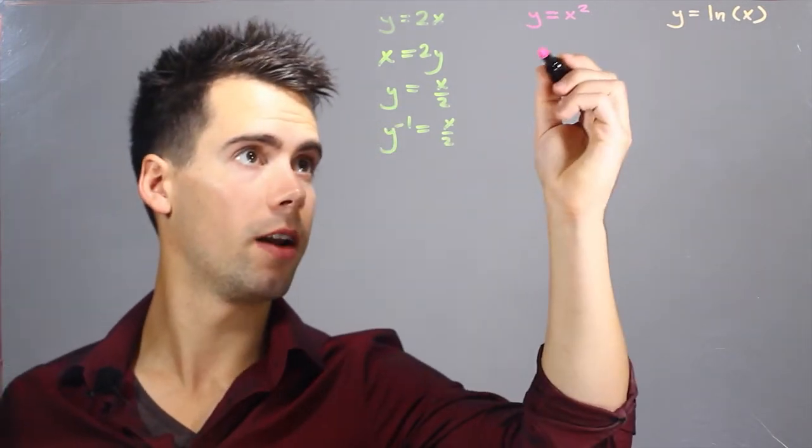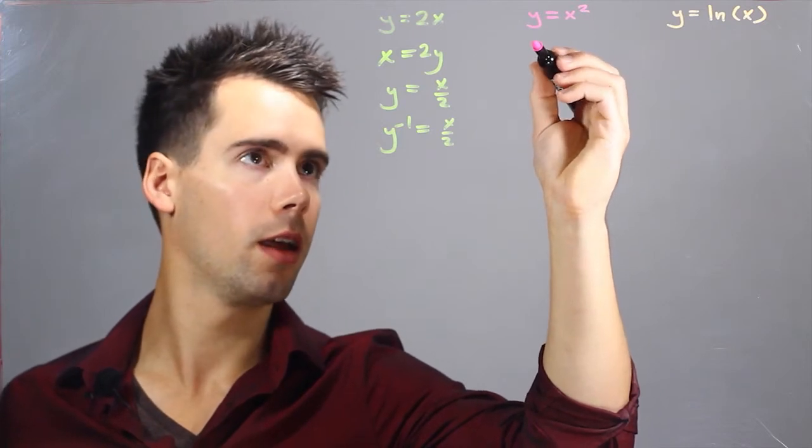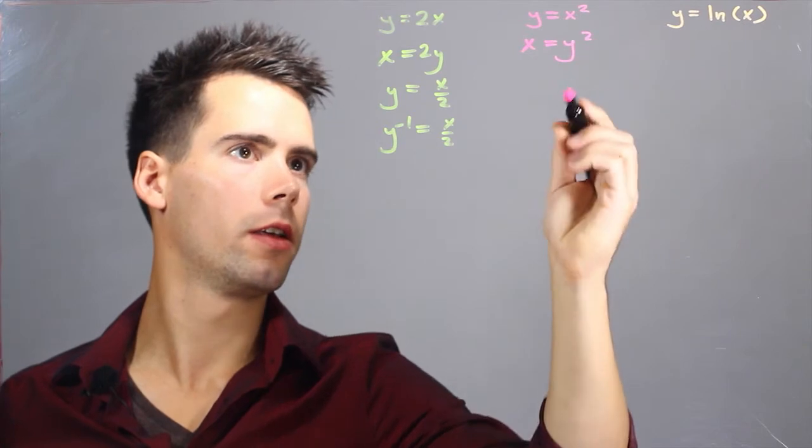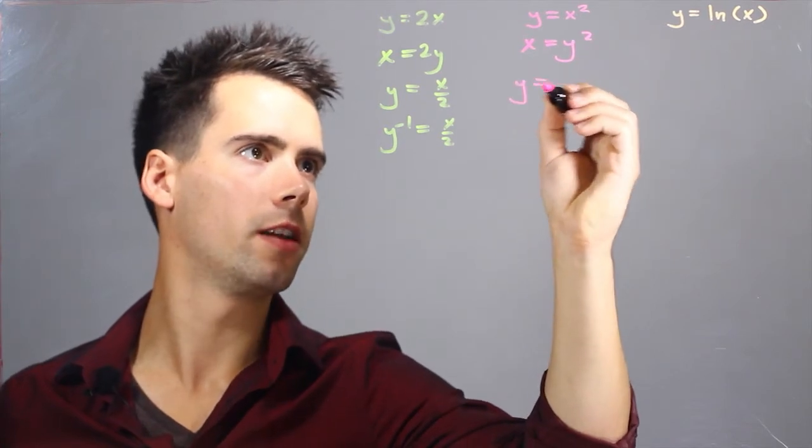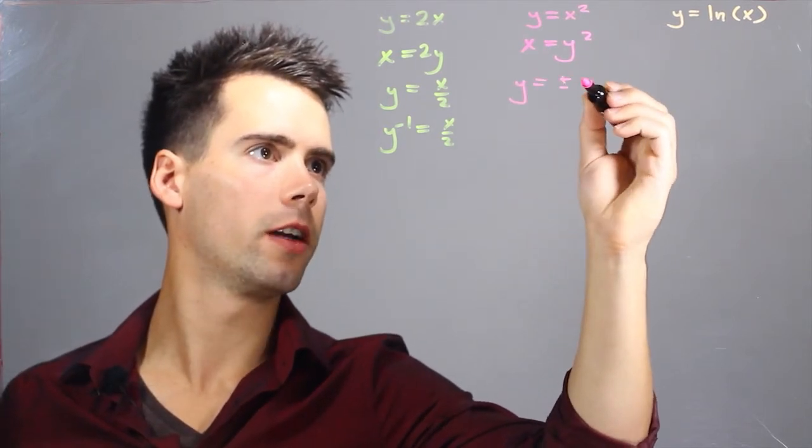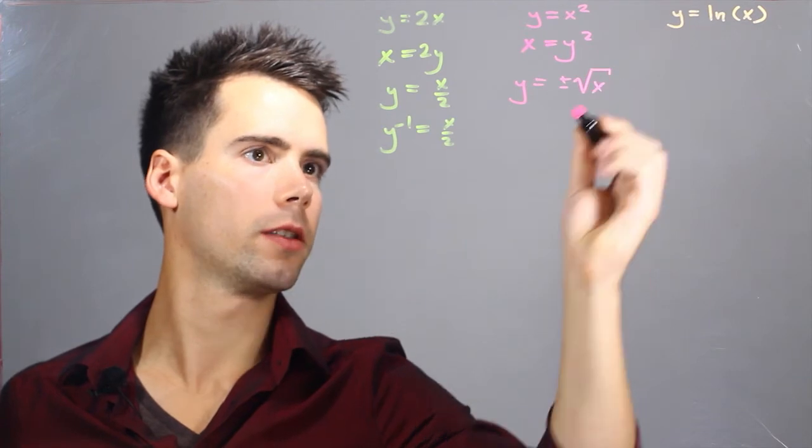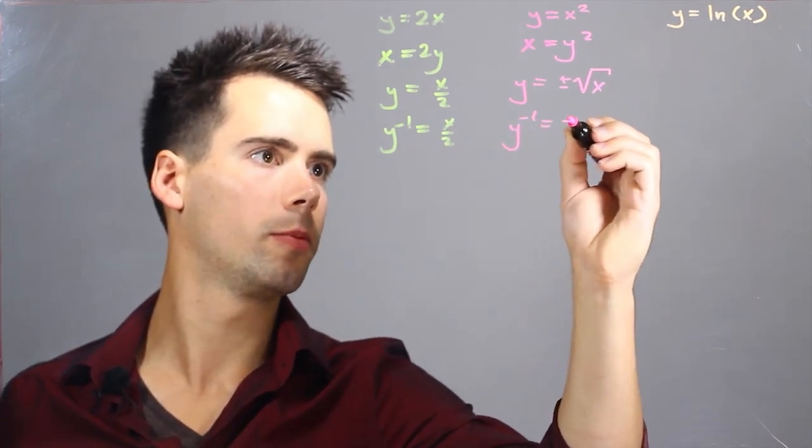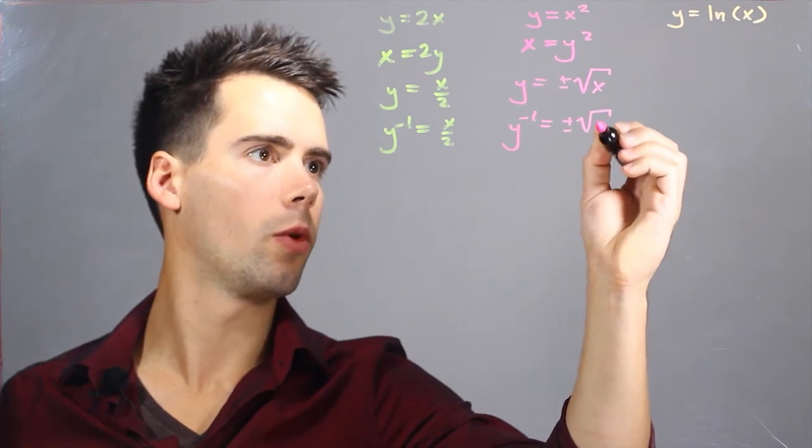Now for the second problem, we can find that writing x as y, x is equal to y squared. And solving for y, we find that it's equal to plus or minus the square root of x. And step three, we find y inverse equals plus or minus the square root of x.